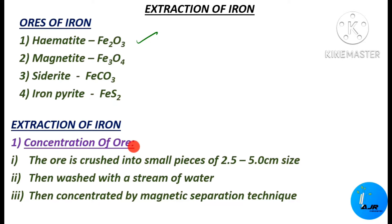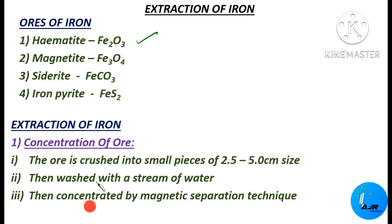The extraction of iron takes place in different steps. The first step is the concentration of the ore. Since we have taken hematite ore, it will have different types of impurities that must be removed first. Before concentrating, the ore should be crushed into small pieces of 2.5 to 5 centimeter size, then washed with a stream of water. After crushing and washing, it is concentrated using the magnetic separation technique.